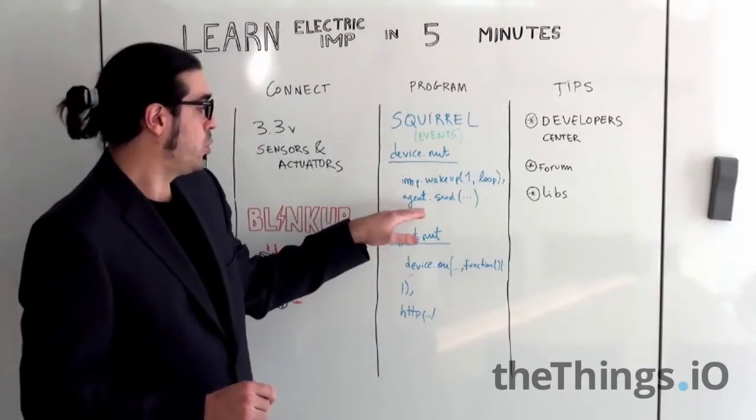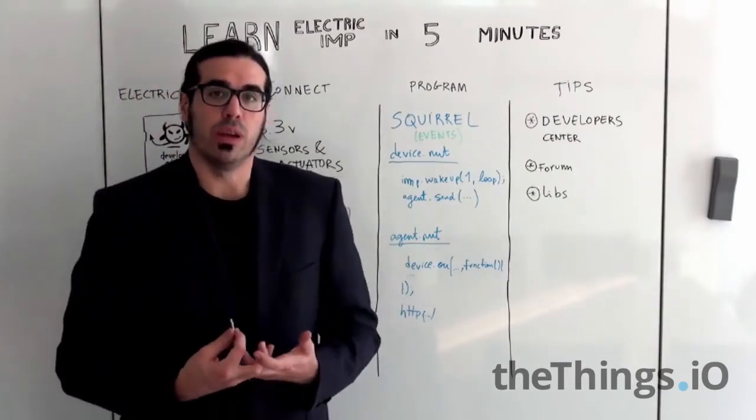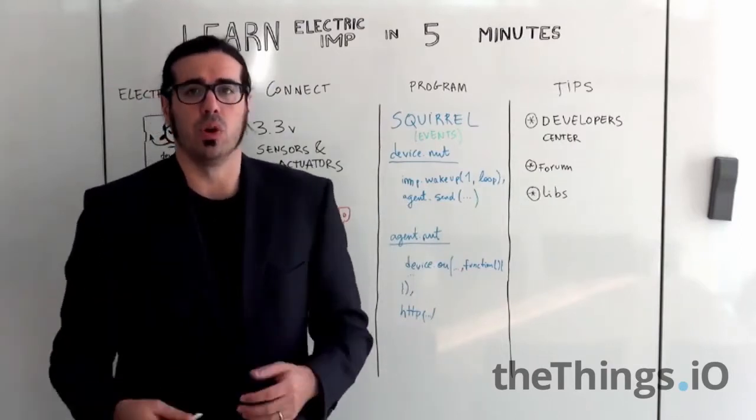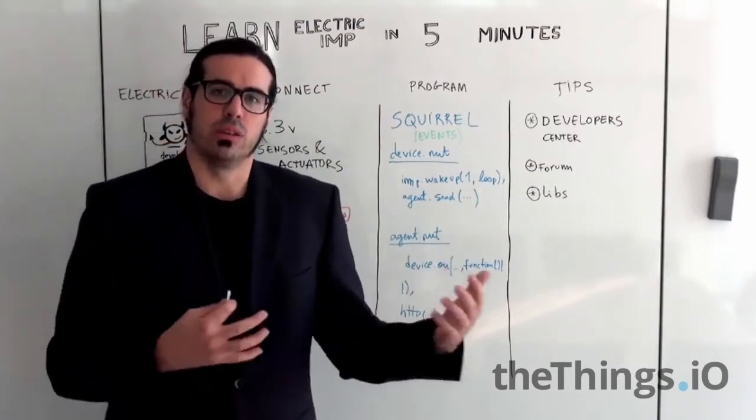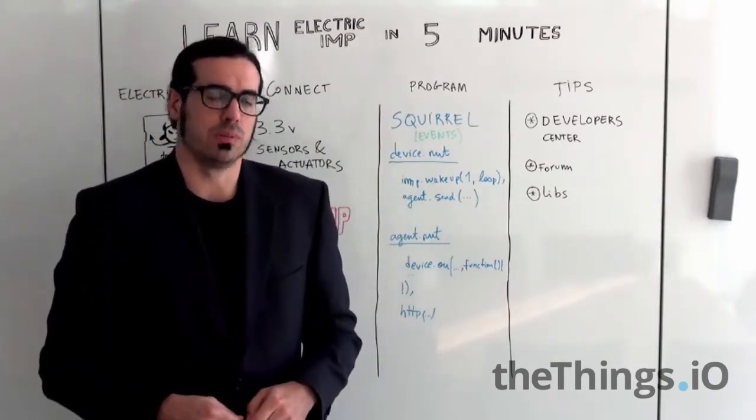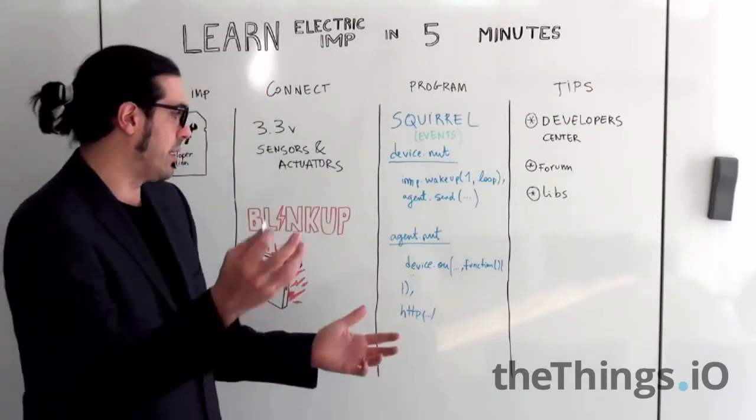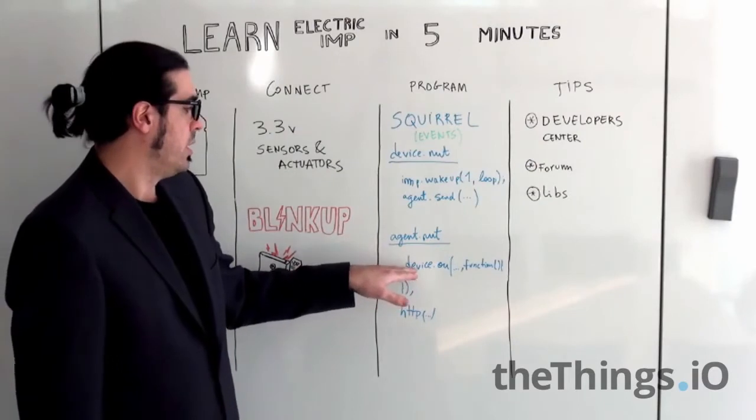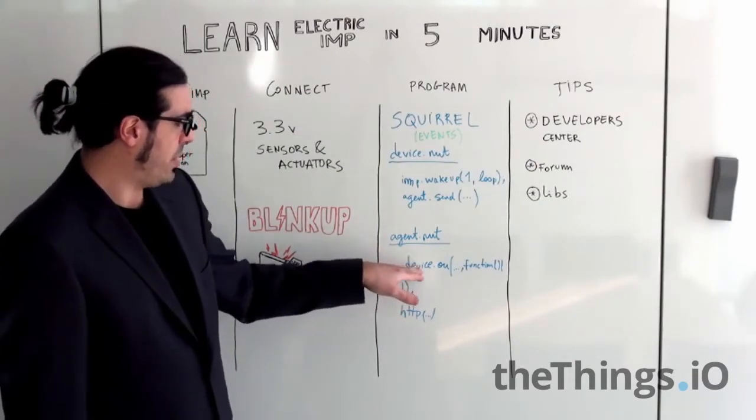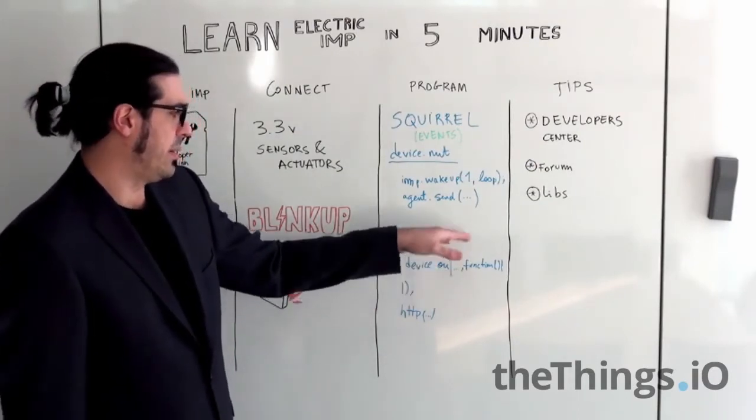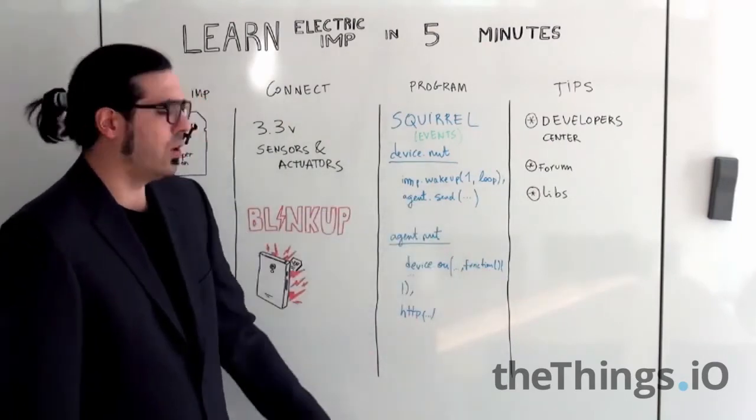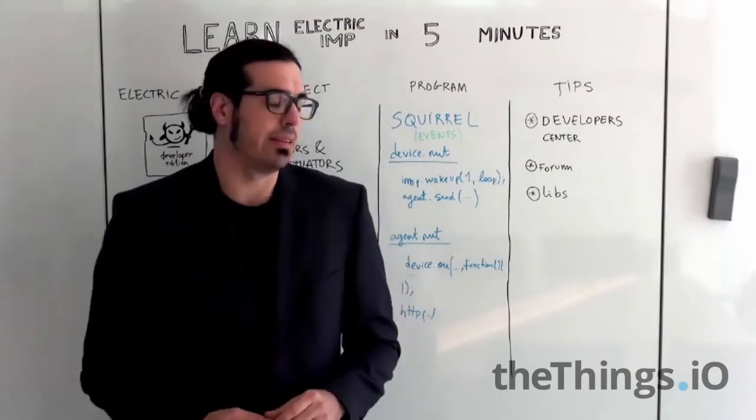That said when you want to call the agents there is an object called agent. So if you say agent.send and then you call the action, the function on your agent model, it actually wakes up your agent that's running on the cloud server and if you have a device on and the name of the method that you were calling on the device and then a function where all your features are developed, it works like that.